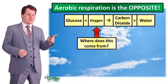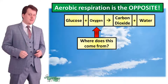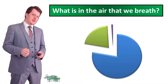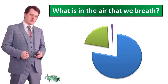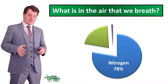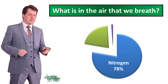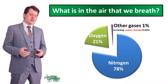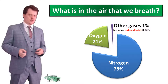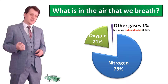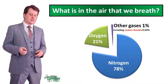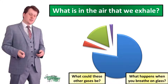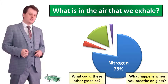But where do we get the oxygen to carry out aerobic respiration? Let's recap what is in the air we breathe. 78% of it is nitrogen, 21% is oxygen, and the other 1% is all the other gases in the atmosphere, including carbon dioxide which only has a percentage of 0.04%. When we breathe out, the amount of nitrogen remains unchanged at 78%.